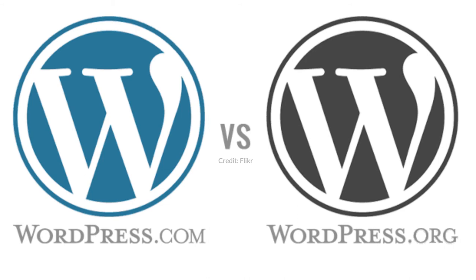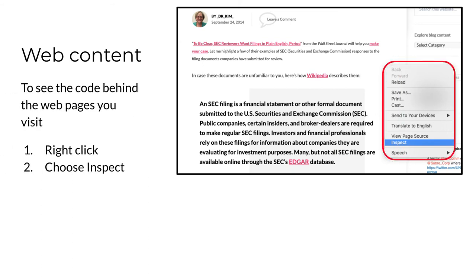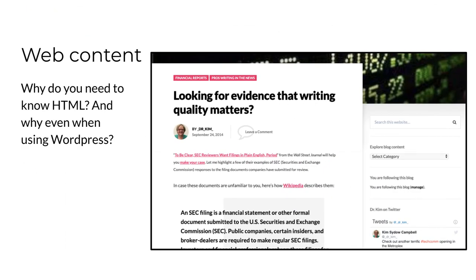In case you didn't know, anyone can see the HTML and CSS code behind the web using most current browsers — you just right-click and choose Inspect. The top box here is the view visitors see on a web page; the bottom box is what you would see if you right-click to choose Inspect — it's the code behind that web page. Note the red arrows correspond to the same content and location on the web page. Let me provide a simple example to show why some knowledge of HTML code is necessary for anybody creating content on the web. The example comes from my own blog, which is housed on WordPress.com.